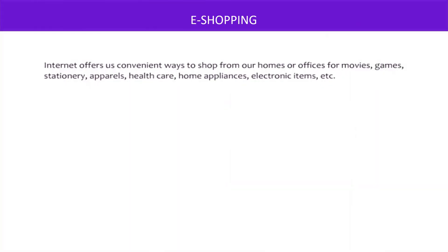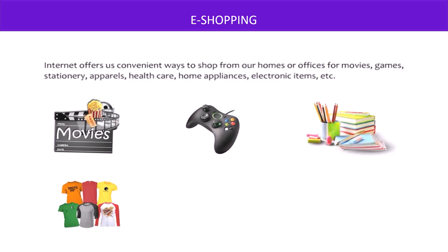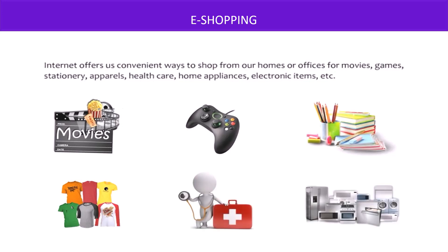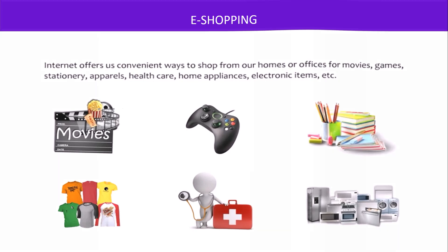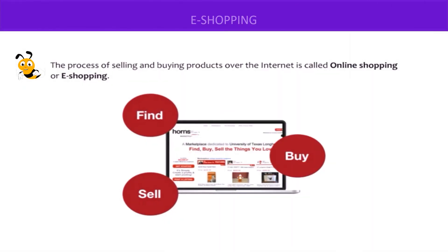Let's talk about e-shopping. The internet offers convenient ways to shop from homes or offices for movies, games, stationery, apparels, health care, home appliances, electronic items, and more. You can buy or sell new as well as secondhand goods. The process of selling and buying products over the internet is called online shopping or e-shopping.